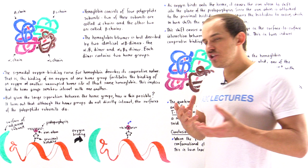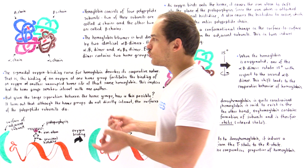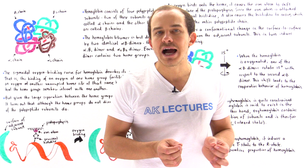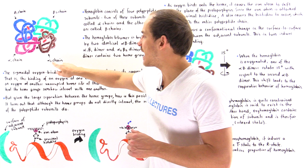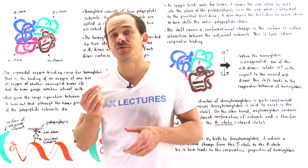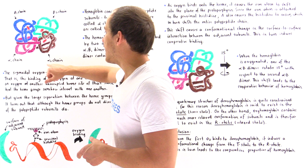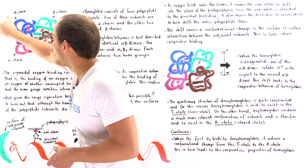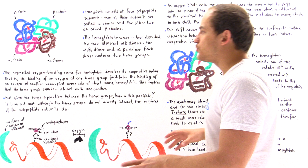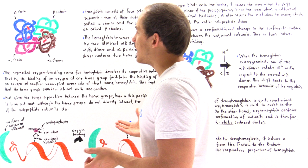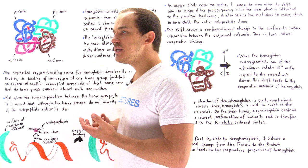Instead of picturing hemoglobin as consisting of four individual chains, we look at it as consisting of two individual dimers: the alpha-1, beta-1 dimer and the alpha-2, beta-2 dimer. A dimer is simply a molecule that consists of two polypeptide chains. Because alpha-1 and alpha-2 are identical and beta-1 and beta-2 are identical, the alpha-1, beta-1 dimer is identical to the alpha-2, beta-2 dimer. We'll see shortly why we break it down into these two dimers.